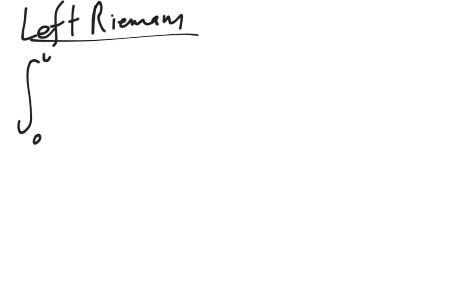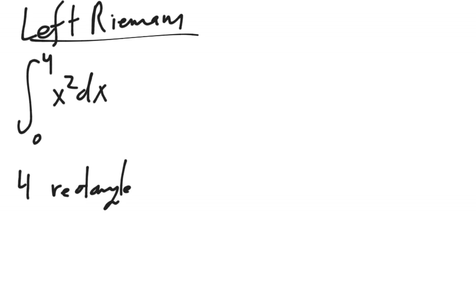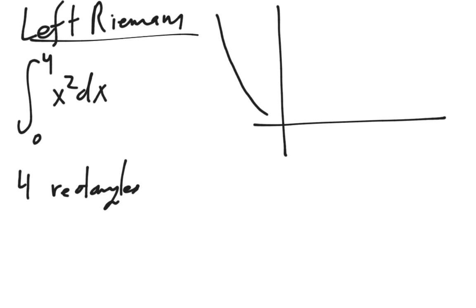Riemann sums are best taught with an example, so we're going to do a left Riemann sum. The way it works is we're going to approximate the area from 0 to 4 of x squared dx — remember that this is the area under a curve — and I'm going to tell you that you're going to use four rectangles to approximate this area. So let's take a look at a graph. Here's y equals x squared.